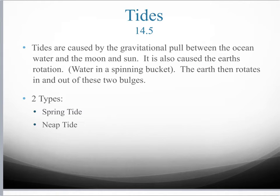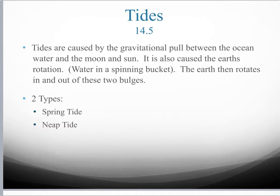Tides are also caused by the Earth's rotation. Imagine if you have a bucket of water and you start spinning that bucket — what would happen to the water inside? Eventually, the water inside the bucket is going to spin as well. The Earth represents that bucket and the ocean represents the water inside it. Since the Earth is spinning, the water on the Earth is also going to spin, and it's going to swing to the outside of the Earth, creating a high tide.